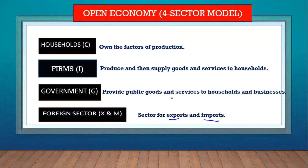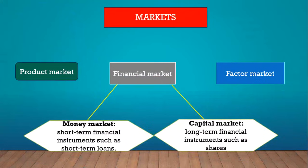With the foreign sector included, we've got an open economy with four participants, making it a four-sector economy. Looking at the participants: households own the factors of production, businesses supply goods and services to households, the government provides goods and services to households and businesses, and in the foreign sector we have exports and imports. In addition to these participants, we also have three markets in the circular flow.